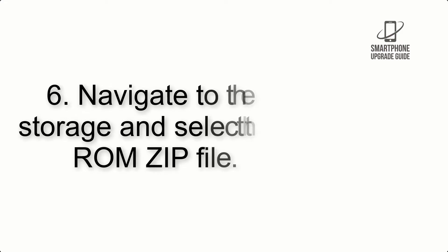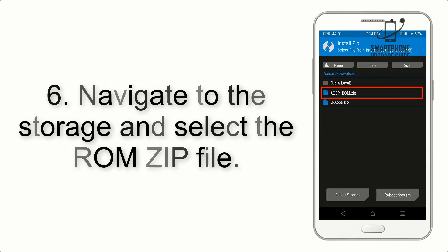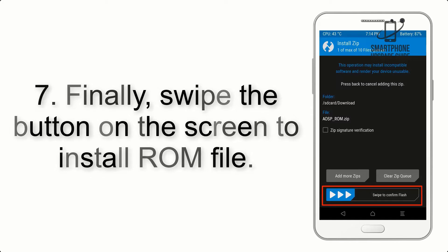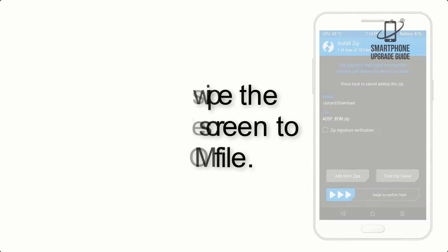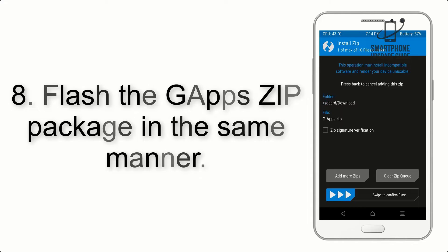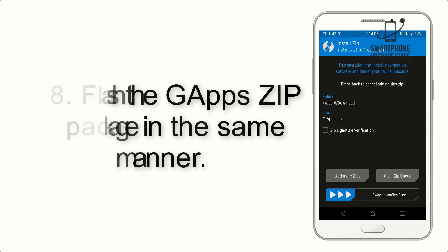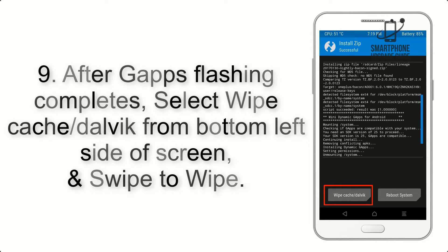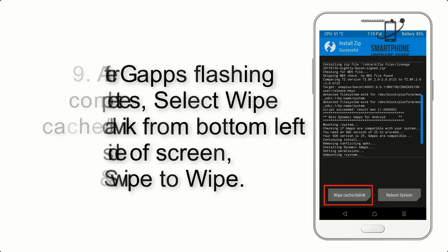Step 6: navigate to the storage and select the ROM zip file. Step 7: swipe the button on the screen to install the ROM file. Step 8: flash the GApps zip package in the same manner. Step 9: after GApps flashing completes, select Wipe Cache and Dalvik from the bottom left side of the screen and swipe to wipe.